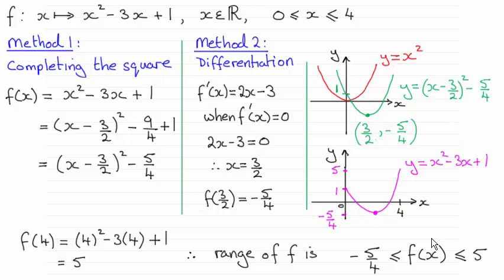And the answer is that f of x is between minus 5 upon 4 and 5 inclusive. So there's two methods that you can use to do this question and I've outlined both of them. I personally prefer the completing the square method but it's up to you.